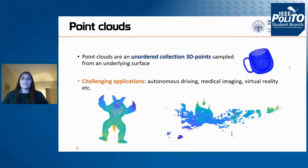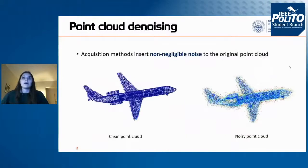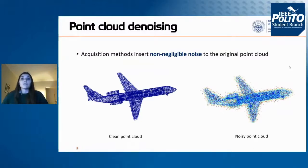Those are just a few of the many applications that point clouds can have. One of the biggest limitations is that all acquisition methods are imperfect and they introduce a non-negligible amount of noise. A point cloud is a set of points in three-dimensional space, each associated with a specific location. Noise changes those locations, so the collected shape differs from the original. Therefore, in safety-critical applications such as autonomous driving, it is particularly important to perform denoising of point clouds in order to reconstruct the original shape.